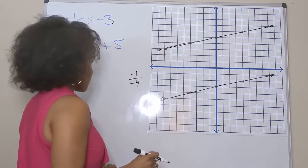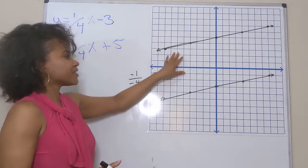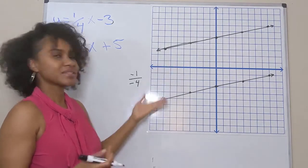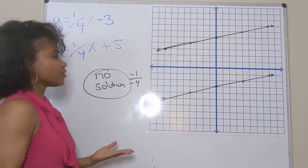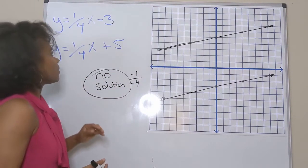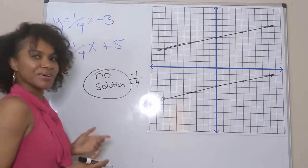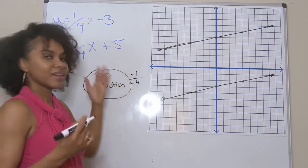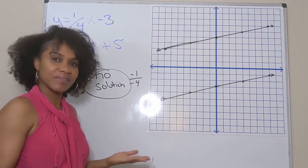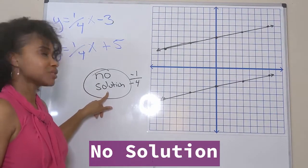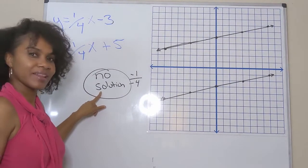A solution to a system of equations is where the graphs intersect. These graphs don't intersect, so this is a special case — the solution is no solution because they don't cross. But notice: our y-intercepts are negative three and five, yet both slopes are one-fourth. If you have the same slope but different y-intercepts, the lines are parallel and will never cross, so it's always no solution.